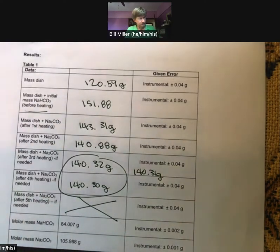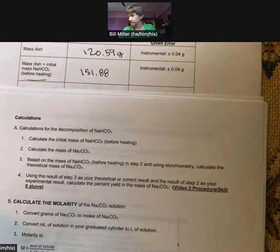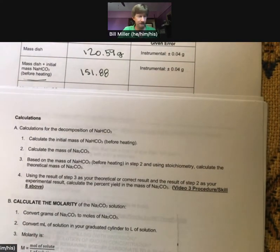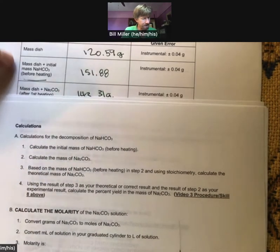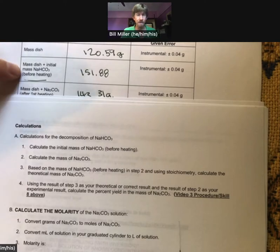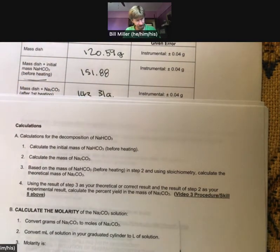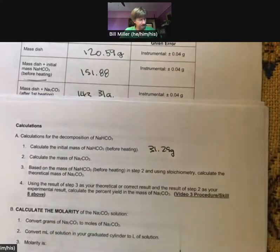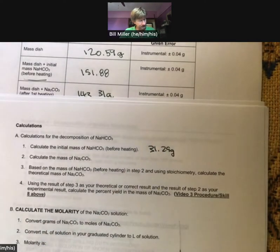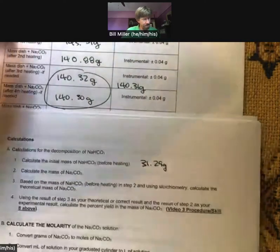Let's just overlap those a little bit and get my calculator. Calculate the initial mass of sodium bicarbonate. That's going to be subtracting the dish from the dish plus the sodium bicarbonate. The difference between these two numbers: 151.88 minus 120.59 equals 31.29 grams.